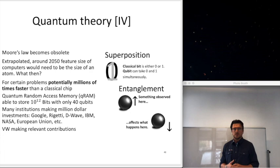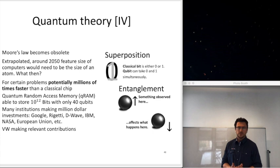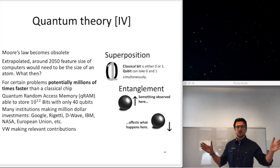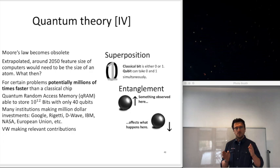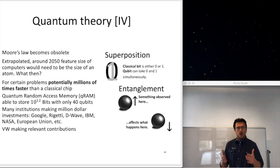Superposition means exactly that — a superposition of states. In classical information theory, the smallest unit is a bit, which can be zero or one. With a string of bits, I can do manipulations, interrupt a calculation, look at the current state without harming it, and continue. There is only one definite configuration at a time.